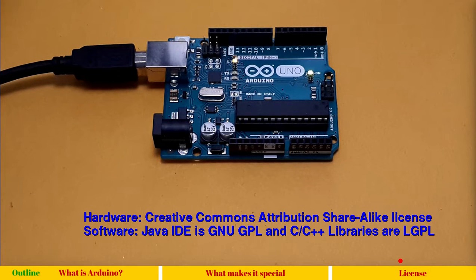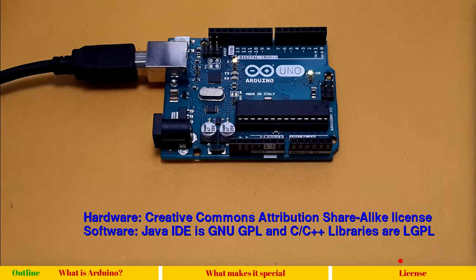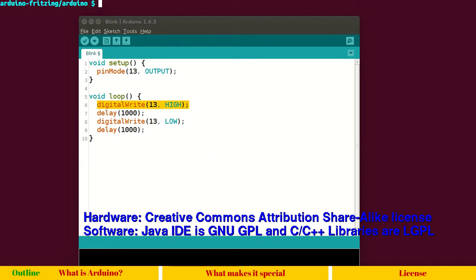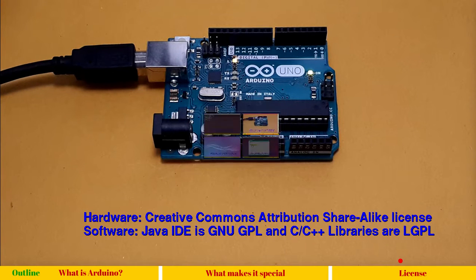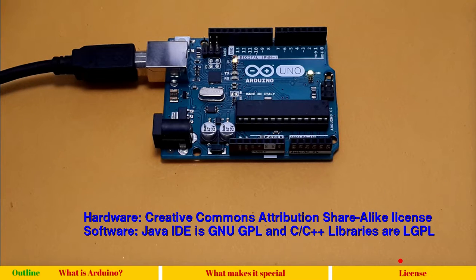This brings us to the last topic of this session: license. Arduino has three different licenses. For hardware it uses Creative Commons, which means you are free to make remixes, transform, or build upon the material as long as you distribute under the same license. The software — the Java IDE — is under the GNU GPL, which similarly asks users to release modifications under the same license. The LGPL and GPL are more or less the same, with minor differences which you may find on the GNU.org website.